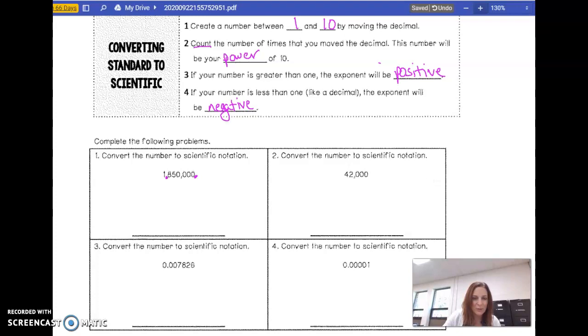Well, if I put a decimal point right here between the 1 and the 8, that becomes a number between 1 and 10. This is different than when we were estimating and we'd round this 1 up, in this case, to 2, 2 million. In this case, I want to rewrite this as 1.85. Now, because this is a shortcut way, I'm not going to include these zeros. Here's how I'm going to count for zeros. I'm going to move it from where I want it to where it is. 1, 2, 3, 4, 5, 6 times.